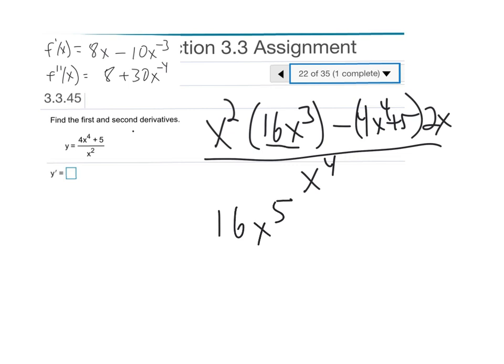Minus 8x^5 minus 10x, all over x^4. Let's see, so that's going to leave me 8x^5, right - 16x^5 minus 8x^5.